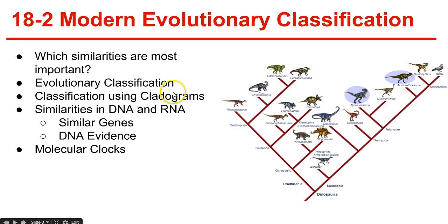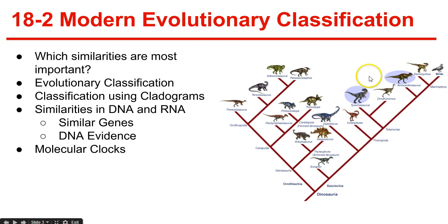Classification using cladograms: cladistic analysis identifies and considers only those characteristics of organisms that carry evolutionary innovations — the derived characters, which are characteristics that appear in recent parts of a lineage but not in older members. Derived characters can be used to construct a cladogram, which is a diagram that shows the evolutionary relationship among a group of organisms, such as these dinosaurs. At the top, we can see that birds are ancestors of some dinosaurs.